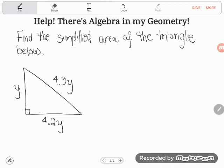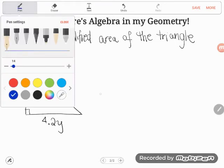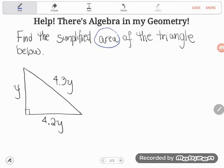So you take a look here. This is what the problem said. It said find the simplified area. Okay, area. I know that word. That's definitely a geometry word of the triangle below.